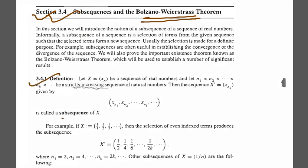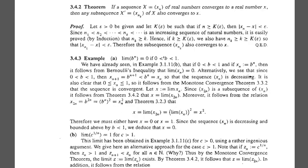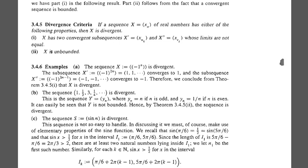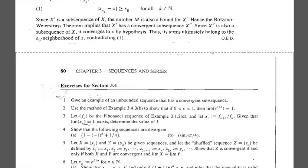Here we are given definitions of subsequences with formal examples. As we know, this book has this type of organized format: definitions, examples, theorems, and so on. Divergence criteria of real numbers with examples, existence of monotone subsequences, and similar topics are there in this chapter.